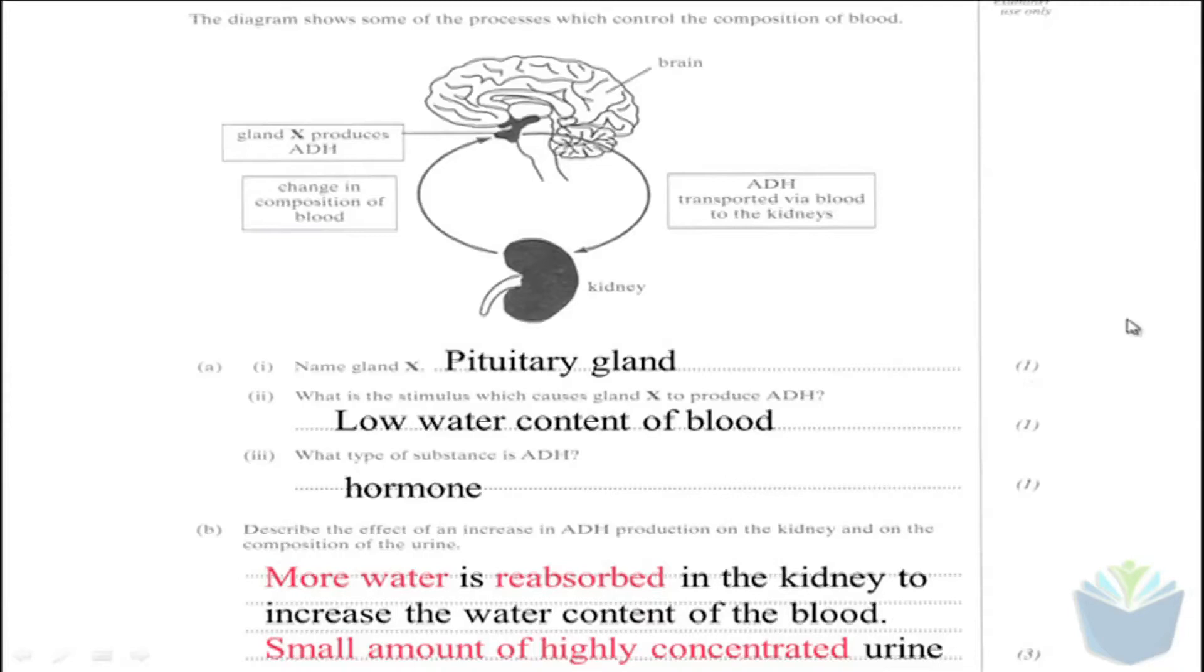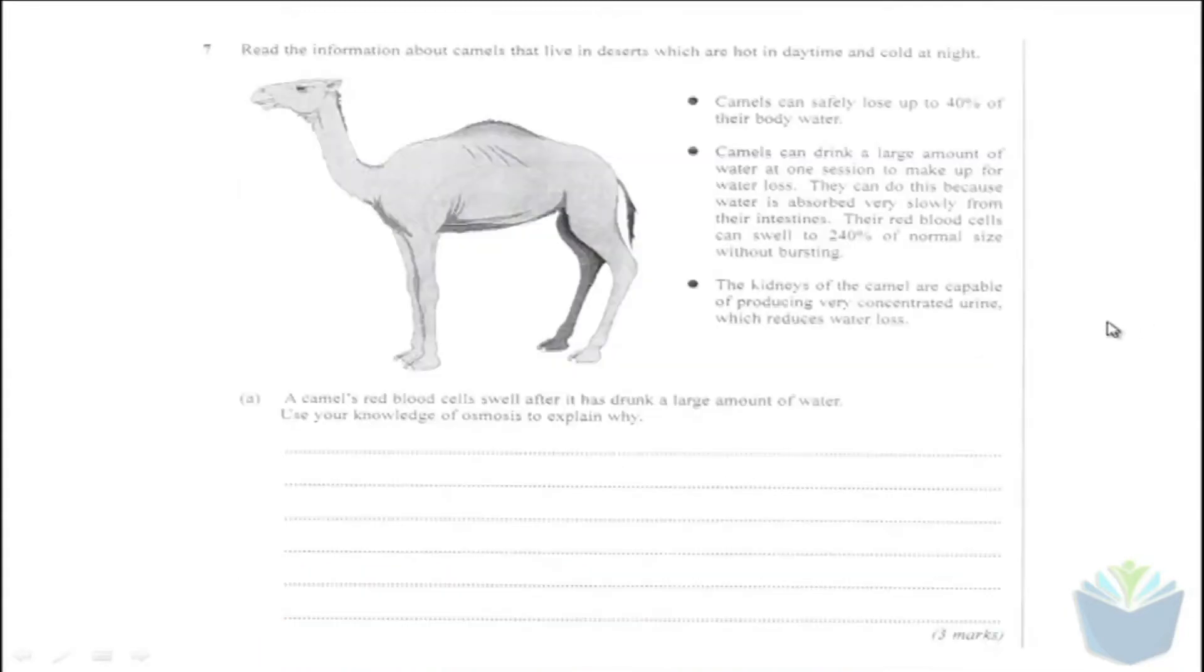Okay, so what they might also ask you is questions related to other animals. So here you've got a question about camels. It tells you that they can safely lose up to 40% of their body water. In fact, they can also drink large amounts of water at one time, and their red blood cells can swell up to 240 times their normal size without bursting. And also that they can produce very concentrated urine as well.